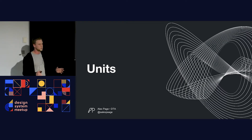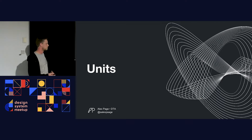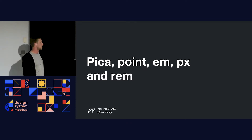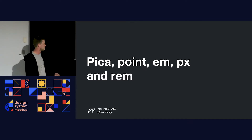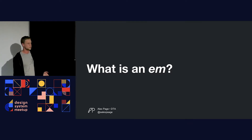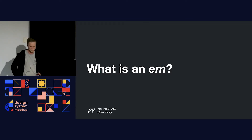Diving into some of the more complicated things inside a design system — units. Designers may be familiar with picas and points. Developers may be familiar with ems, pixels, and rems. Does anyone here know what an em is? What the definition of an em is, or where the word em came from?